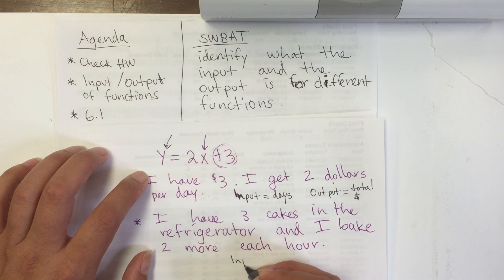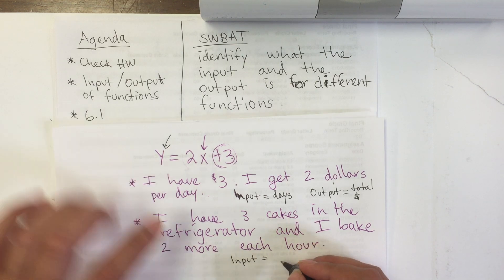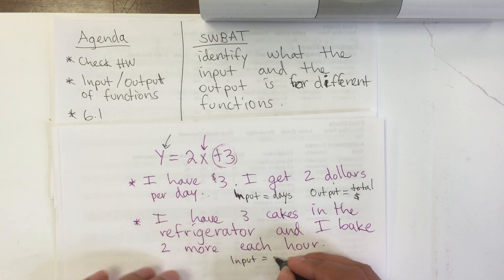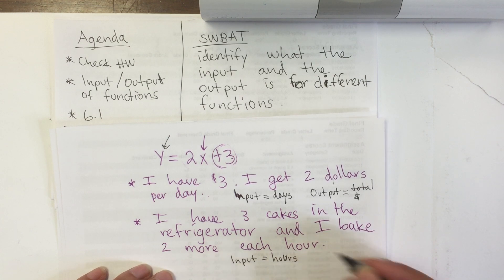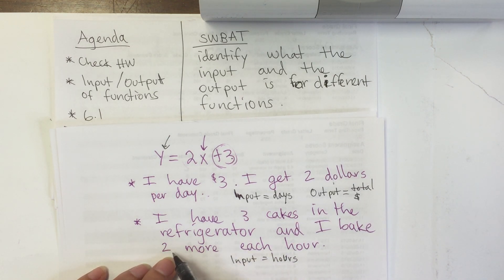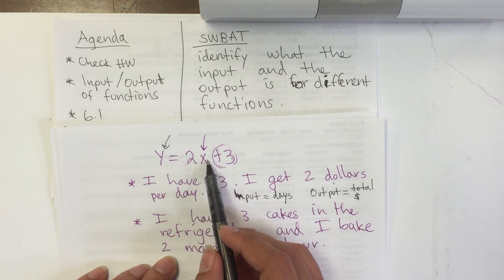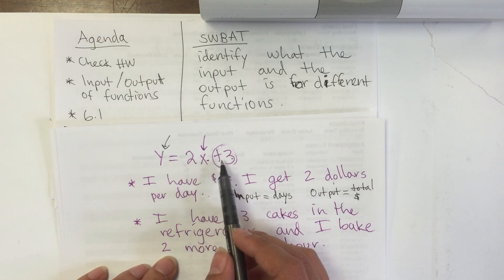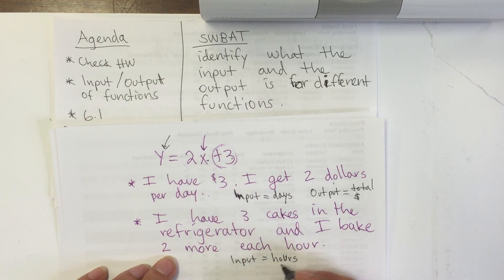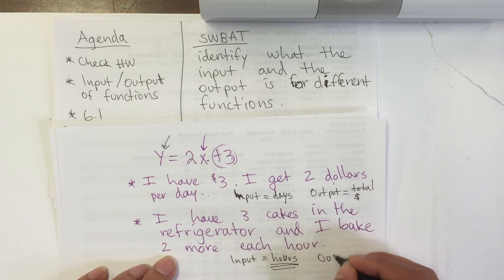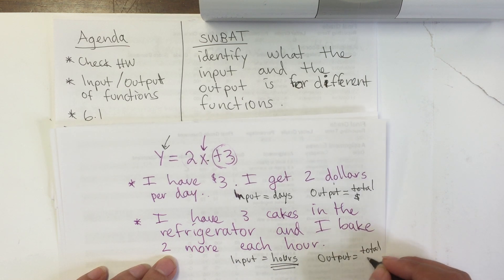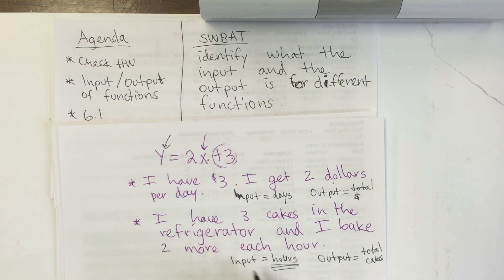If the situation was like the cake one, the input is hours. Depending on how many hours — let's say five hours have gone by — you multiply two times five, which is ten more cakes, plus three, that's thirteen cakes. So depending on how many hours have gone by, the output will be the total cakes you have after so many hours. The input is the hours; the output is the total cakes.